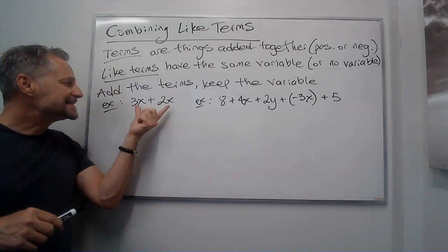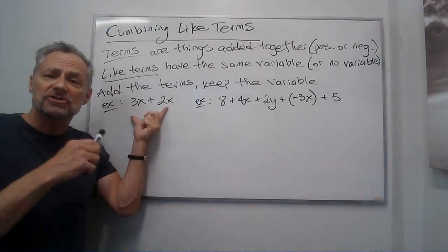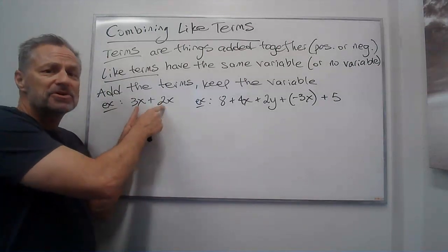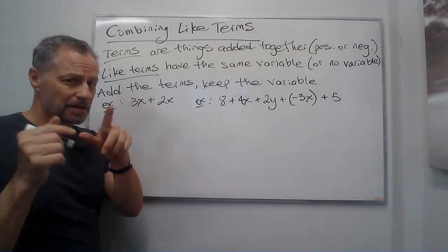So I've got a couple examples. For instance, these both have x's so these are like terms. To add them up all we do is we add the numbers and keep the variable. So let me show you.